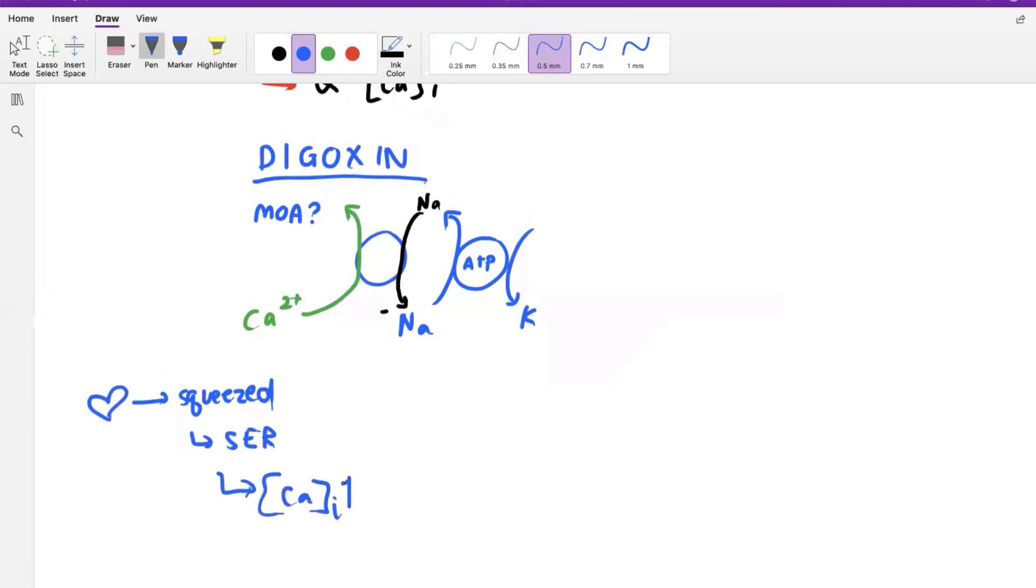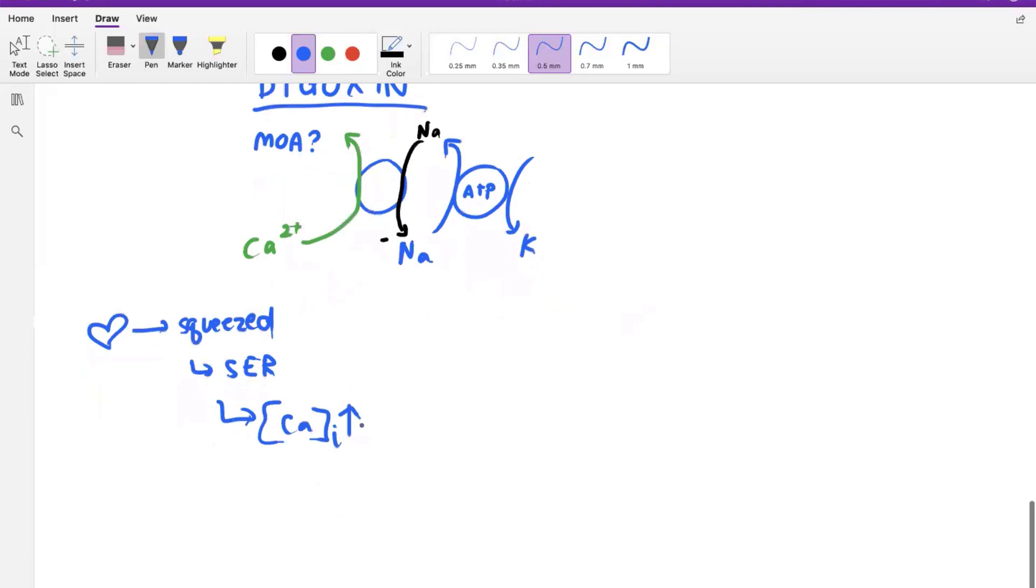Now, there are two mechanisms in which your heart says clean up, clean up everybody before the next squeeze. So one way that the heart is going to clean up that amount of intracellular calcium is via this whole phospholamban and sarcopal mechanism. We'll pause right there.